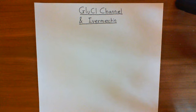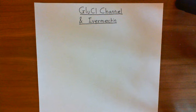We'll start with what the GluCL channel is, go through its structure, talk about the opening and gating of the GluCL channel, and then move on to how the drug ivermectin affects this channel — specifically, how it causes the channel to open and how this can be used to treat onchocerciasis.